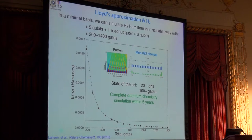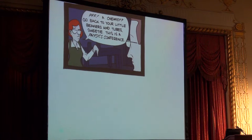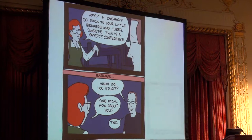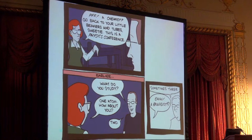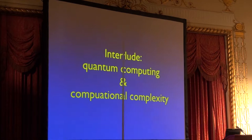Let's see if I can get this pointer working. This point here is the chemical precision line. So if you have about 600 gates and six qubits, you'll have done the first no compromises quantum chemistry simulation. There was this fantastic poster by Cornelius Hempel on Monday night where he showed they had a string of 20 entangled ions. In the same system they've done about 100 plus gates. So in answer to your question, Philip, I'm pretty sure that they'll be the first complete quantum chemistry simulation within five years with ions. It won't be photons. But I'm talking to you about photon simulation. So what am I going to do next? Well, chemists go back to your little beakers and tubes, sweetie. This is a physics conference. What happened earlier? What do you study? One atom. How about you? Two. Sometimes three. Ugh, biologist. The logical progression here from three to two to one is now I'm going to talk about no atoms. So I'm going to do maths.